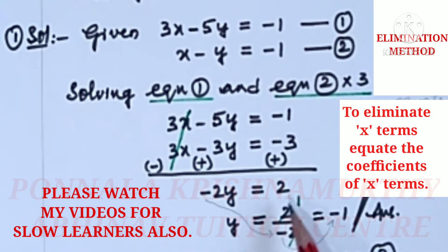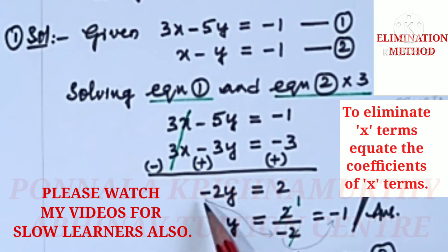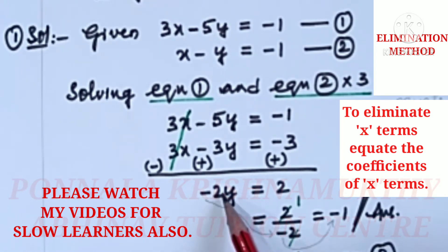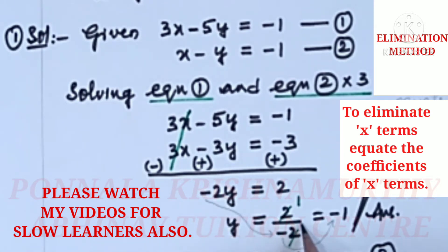3 minus 1 is 2. So y is equal to plus 2 by minus 2. This minus remains — don't change this into plus. So y equals minus 2 divided by... two ones are cancelled, y is equal to minus 1.